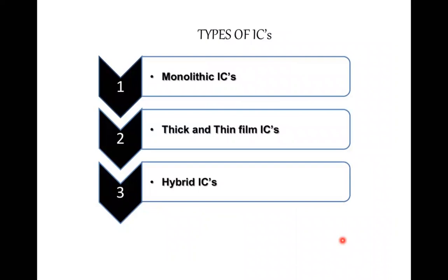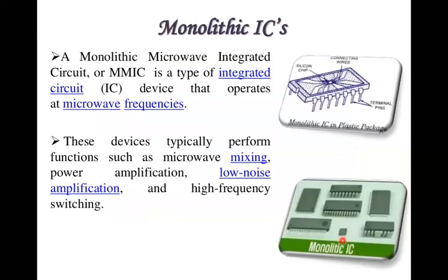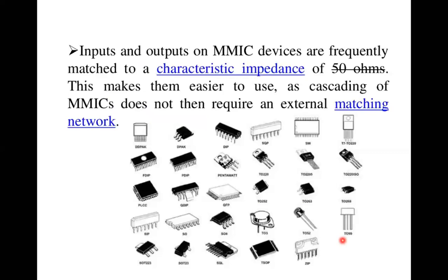There are three types of ICs. The first is monolithic: a Monolithic Microwave Integrated Circuit (MMIC) operates at microwave frequencies and performs functions such as microwave mixing, power amplification, low noise amplification, and high-frequency switching. Inputs and outputs on MMIC devices are typically matched to 50 ohms, making cascading of MMICs possible without external matching networks.